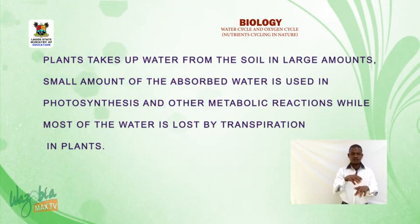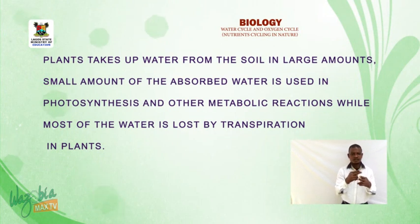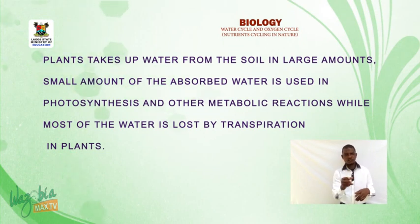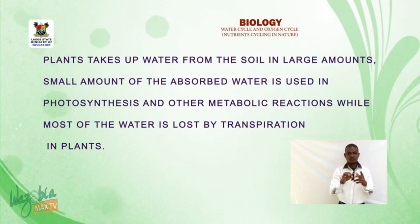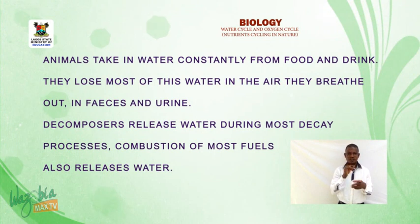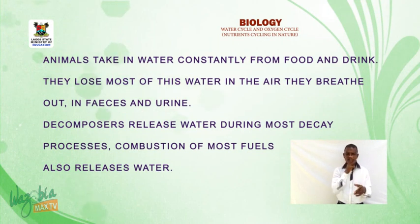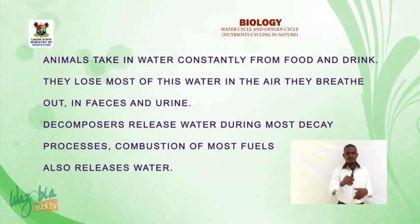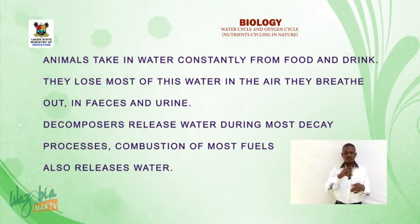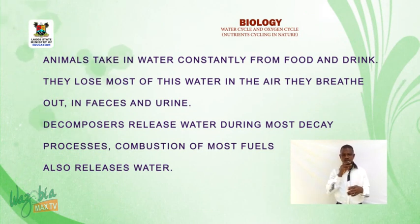Plants take up water from the soil in large amounts. A small amount of the absorbed water is used in photosynthesis and other metabolic reactions, while most of the water is lost by transpiration in plants. Animals take in water constantly from food and drink; they lose most of this water in the air they breathe out, in perspiration and urine. Decomposers release water during decay processes, and combustion of most fuels also releases water.